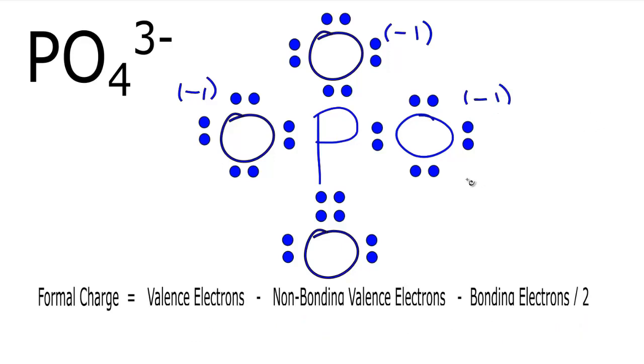Down here on the bottom of the phosphate ion we have a double bond. We're looking at this oxygen right here with this double bond, so we're probably going to have something different. Let's do the calculation. Oxygen has six valence electrons. In fact, oxygen will always have six valence electrons.